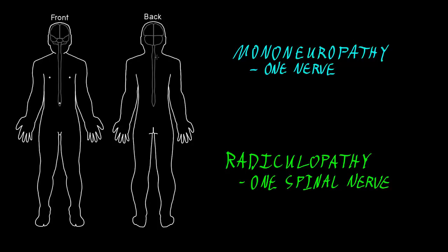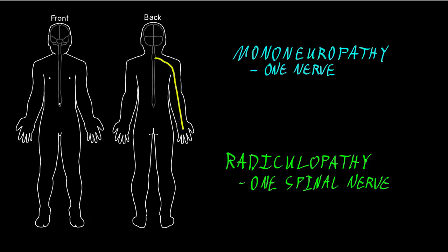If we look at nerves derived from spinal nerves — the nerves coming out of the spinal cord — for example, a nerve going down into the hand: if we had a lesion of that peripheral nerve way out in the periphery, such as near the wrist, we would call that a mononeuropathy. If instead there was a problem at the spinal nerve connecting to the spinal cord, or very close to it, we would call that a radiculopathy.